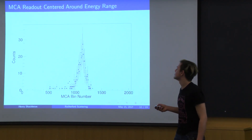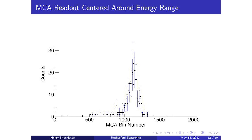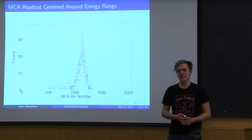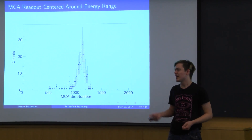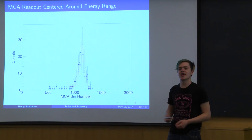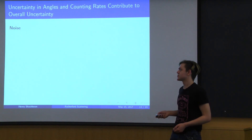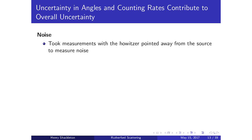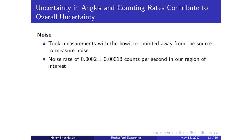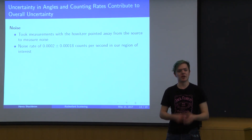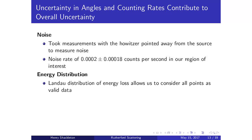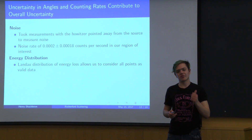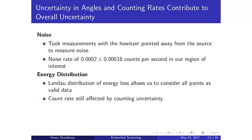By fitting to a Landau distribution we get reduced chi-squared between 0.5 and 2, which suggests that all detected points are valid scattering data and not just noise. We further confirm this by measuring our noise — pointing the howitzer away from the detector and letting it collect — and find that the noise within our energy range of interest is very small, much smaller than any count rate we care about in our experiment.